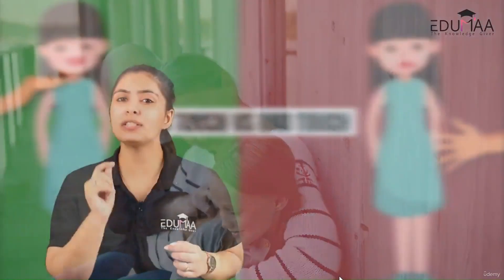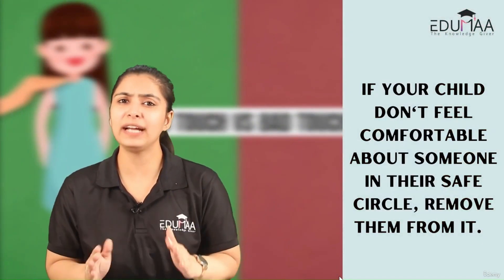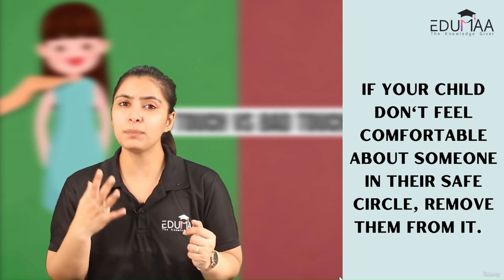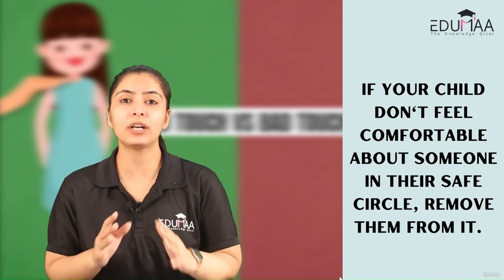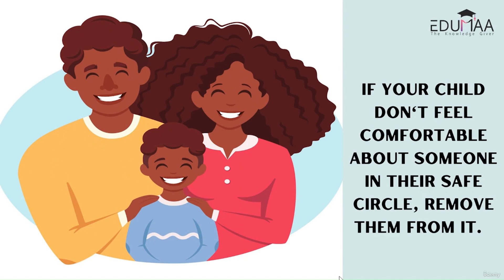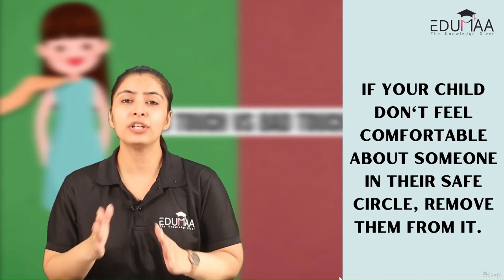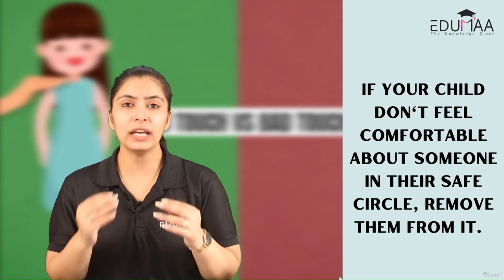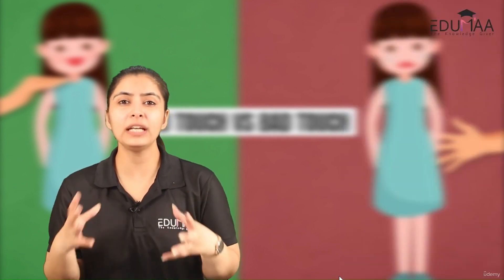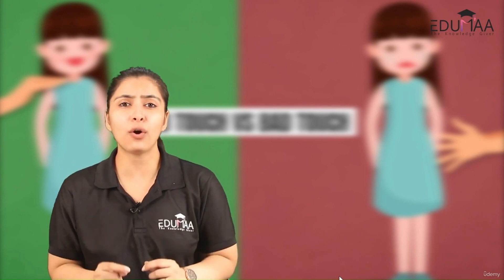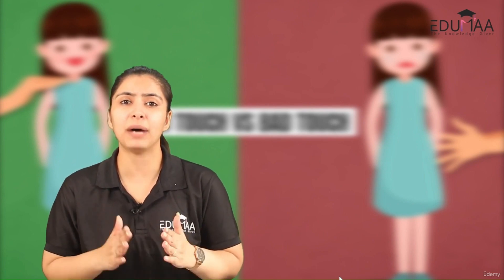Here's an important tip for you, parents. If your child still doesn't feel comfortable about a person in their safe circle, it's important for you to make them believe that you completely trust them. Make them believe that mama and papa always love them, always trust them, and will always be on their side no matter what happens. If they feel that a person is not making them feel safe, you should completely remove that person from their safe circle. This will increase the security in your relationship and your child will believe that their parents are always with them.